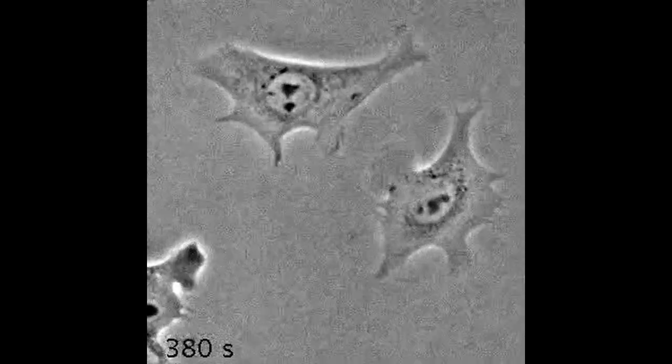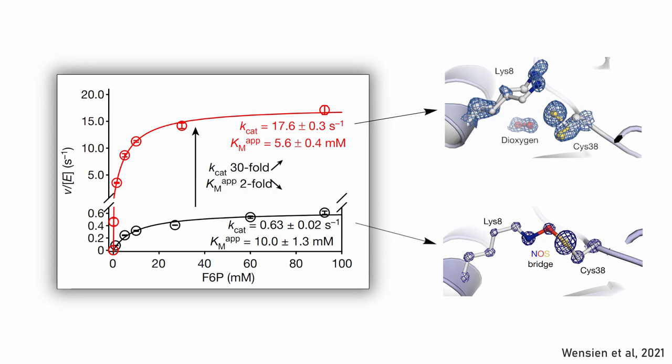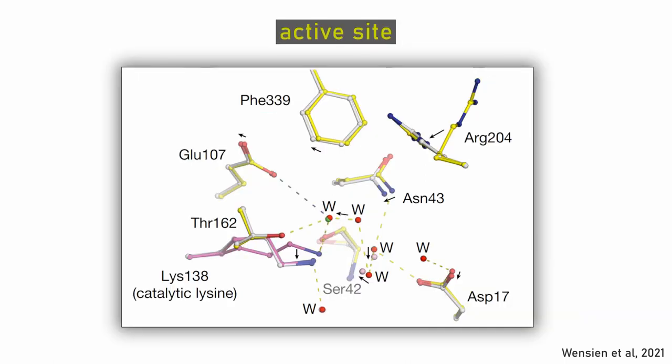The NOS bridge in NGTAL regulates the enzyme activity by its redox state. The oxidized form of the enzyme possesses the NOS bridge and is inactive. The reduced form without crosslinking is active. This is likely due to an impact of the NOS formation on the structure of the active site.